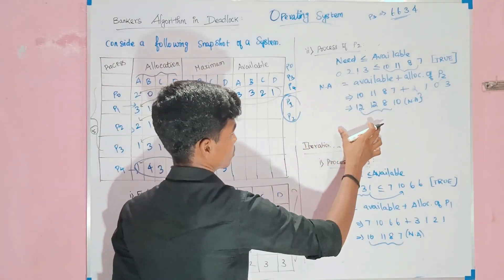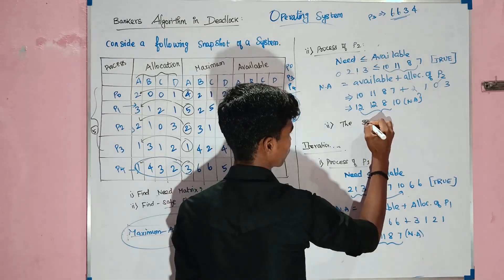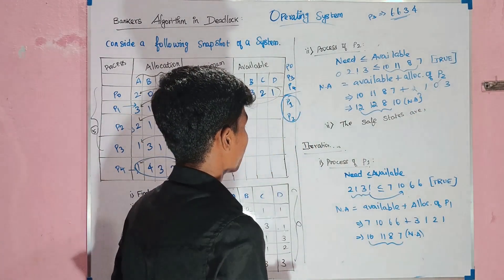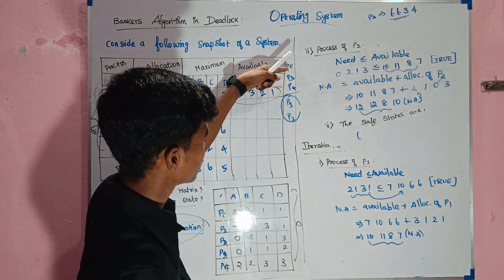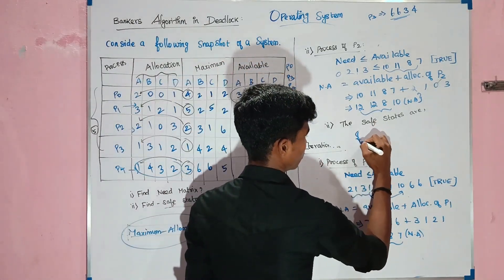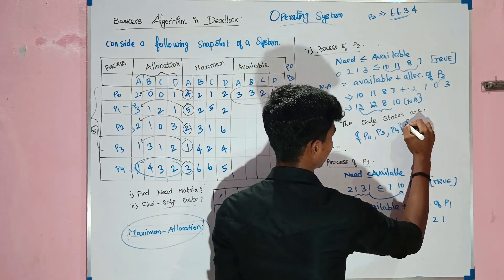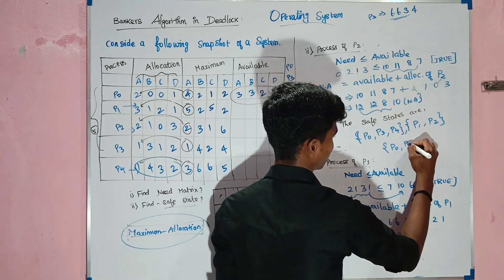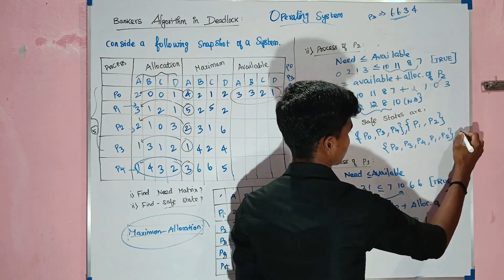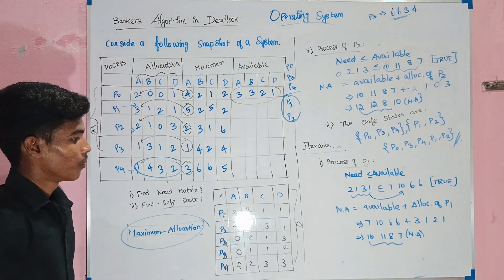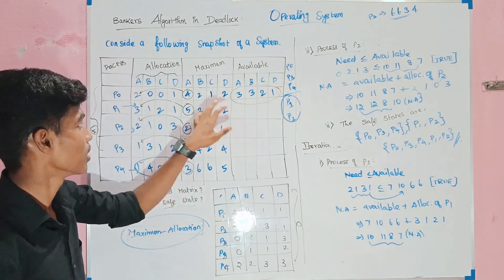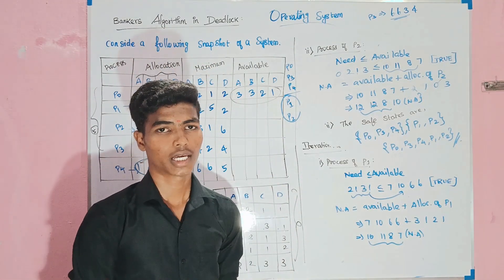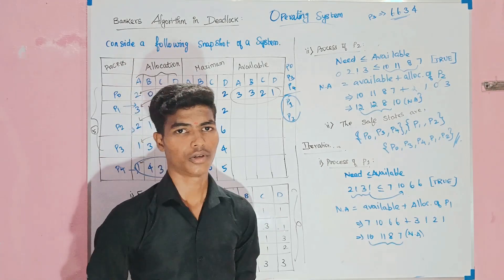All processes are now complete. This is a safe state. The safe state sequence is P0, P3, P4, P1, P2. This is the Banker's Algorithm in Deadlock with 4 variables (A, B, C, D) and resources R1, R2, R3. Thank you for watching this video — please like, share, and comment!